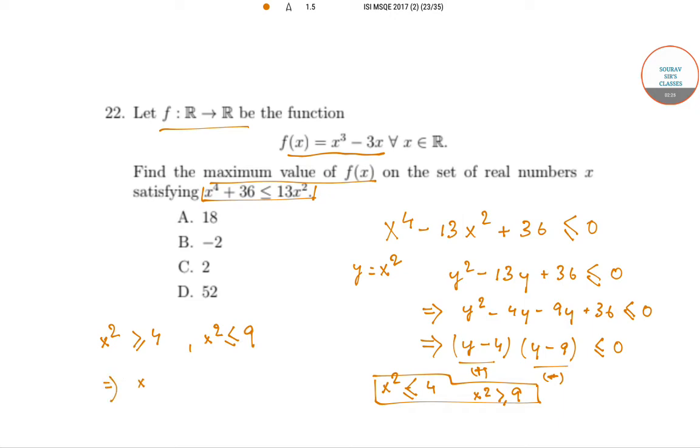Which implies x belongs to [-3, -2] union [2, 3]. So now what we have done is we have found out the set in which our x can lie, the set from which we have to find the maximum value. So x can either belong to [-3, -2] closed or [2, 3] closed.